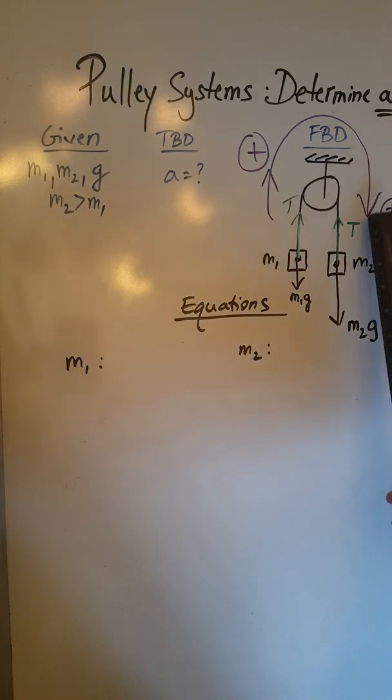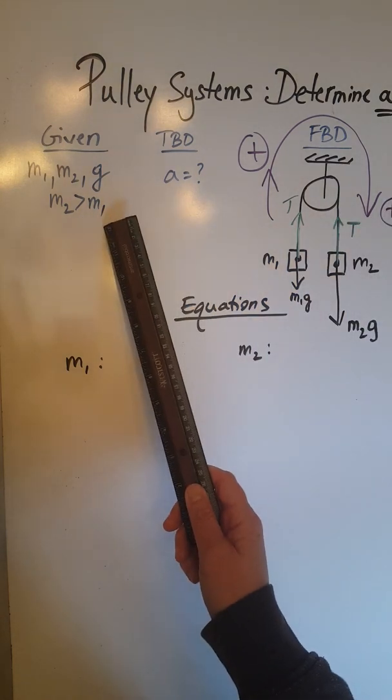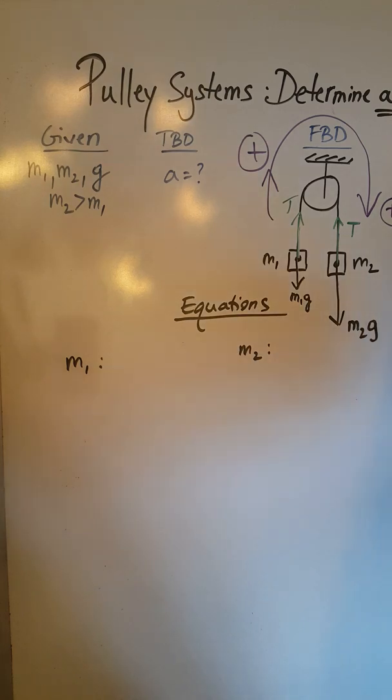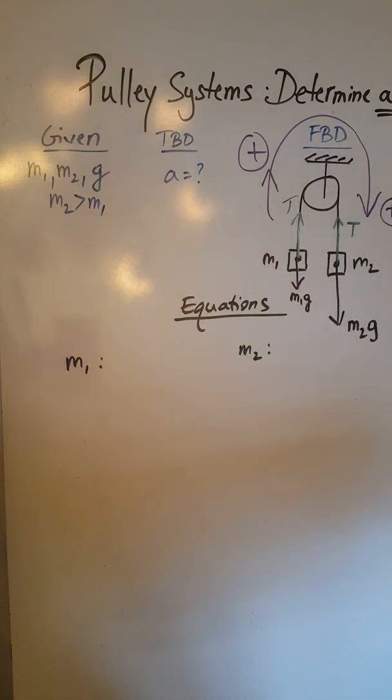We start with the first one, the Atwood machine, with the two objects M1 and M2, M2 greater than M1, and here is the free body diagram that you already know how to do because I introduced that to you in my previous YouTube videos.